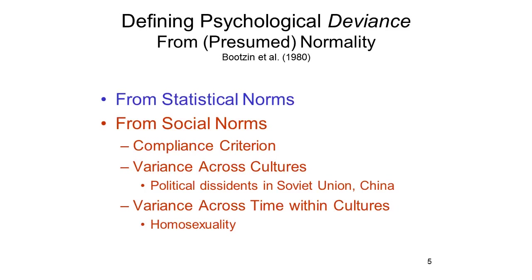But the social norms criterion also has its problems. For example, norms vary across societies. In the former Soviet Union, political dissidents were sometimes classified as mentally ill and confined to mental hospitals simply for disagreeing with their government, and the same thing sometimes happens in China today. Moreover, norms even vary across epochs within society. When I began my graduate studies in 1970, homosexuality was listed as a mental illness in the official Diagnostic and Statistical Manual of Mental Health. Then, around 1973, the American Psychiatric Association took a vote and decided that it wouldn't consider homosexuality to be a mental illness any longer. One may agree with that vote, as I do, but the essentially political process by which the status of homosexuality was changed should give us pause.